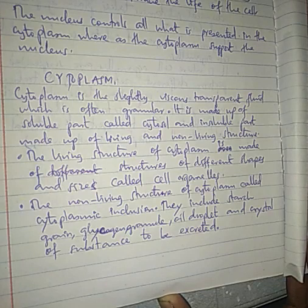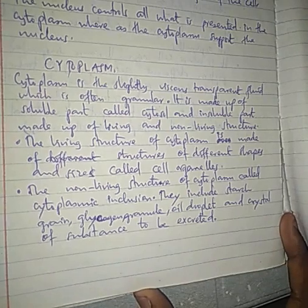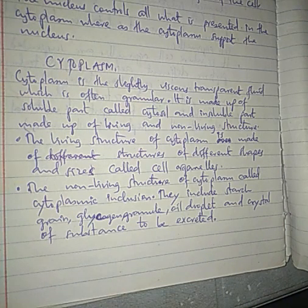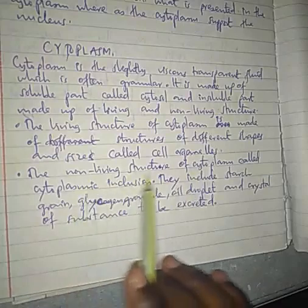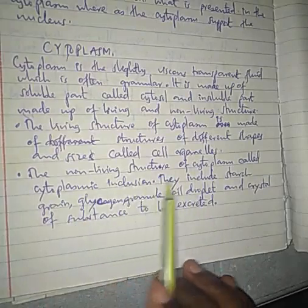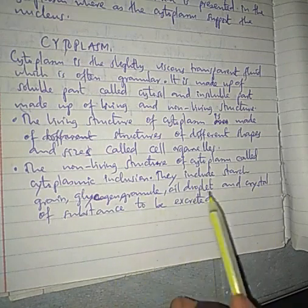Cytoplasm is made up of a soluble part called cytosol and an insoluble part made up of living and non-living structures. The living structure of cytoplasm is made up of structures of different shapes and sizes called cell organelles, while the non-living structures of cytoplasm are called cytoplasmic inclusions — these include starch granules, glycogen, oil droplets, crystals of substances to be excreted, and so on.